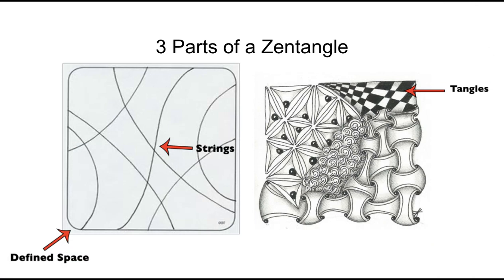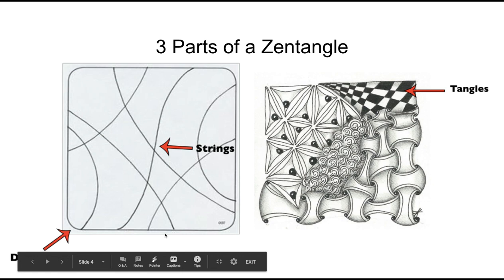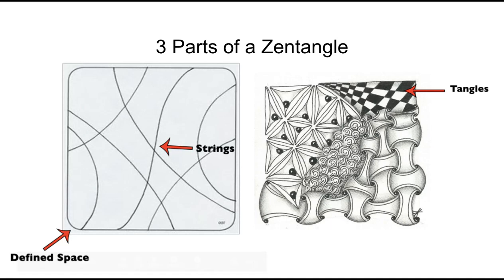There are three parts to a Zentangle. The first part that is the most important is the defined space. The defined space for this one is this tile that goes all the way around, this rectangle here. That's your defined space. In order to create that space into a Zentangle, you need to add strings,